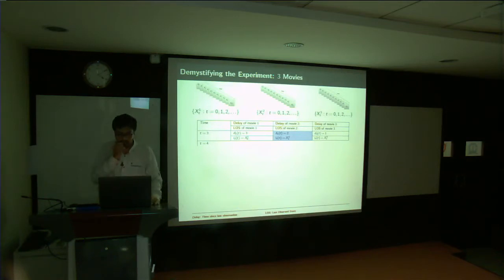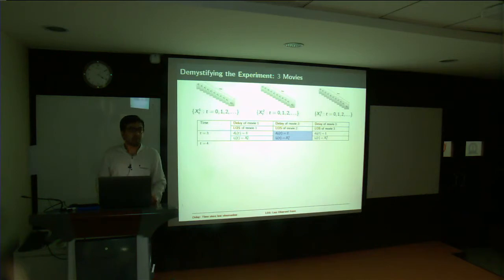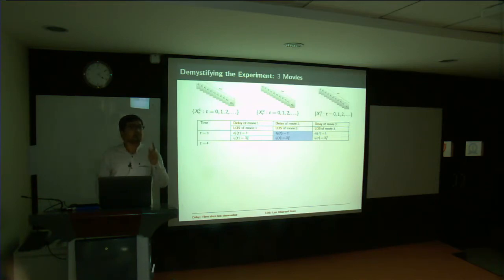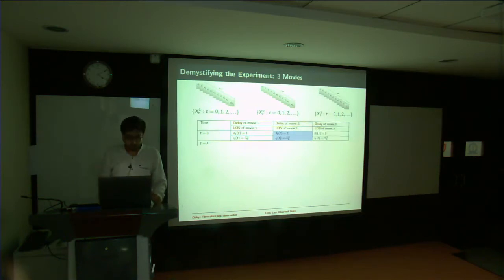So the way I try to capture these two parameters is: A, what is called delay — the time since you last observed a certain movie — and B, the last observed state of that movie, the last observed frame.